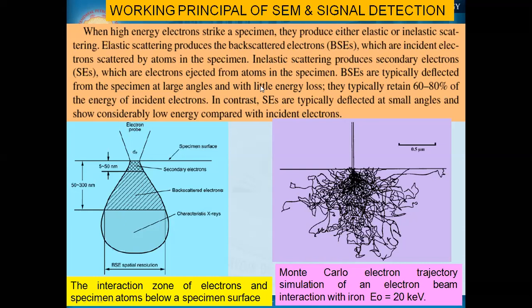Backscattered electrons are typically deflected from the specimen at large angles and with little energy loss — they typically retain 60 to 80% of the energy of the incident electron. In contrast, secondary electrons are typically deflected at small angles and have considerably lower energy compared to the incident electron. So we get two types of electrons: backscattered electrons from elastic scattering, and secondary electrons generated from the atoms of the specimen itself.